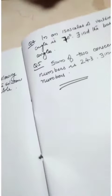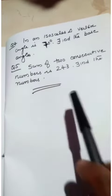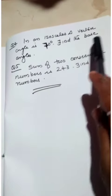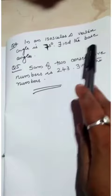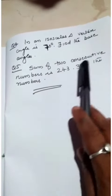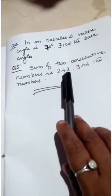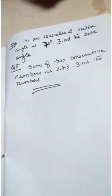Okay, next page problem. In an isosceles triangle, vertex angle is 70 degrees. Find the base angle. Sum of 2 consecutive numbers is 243. Find the numbers.